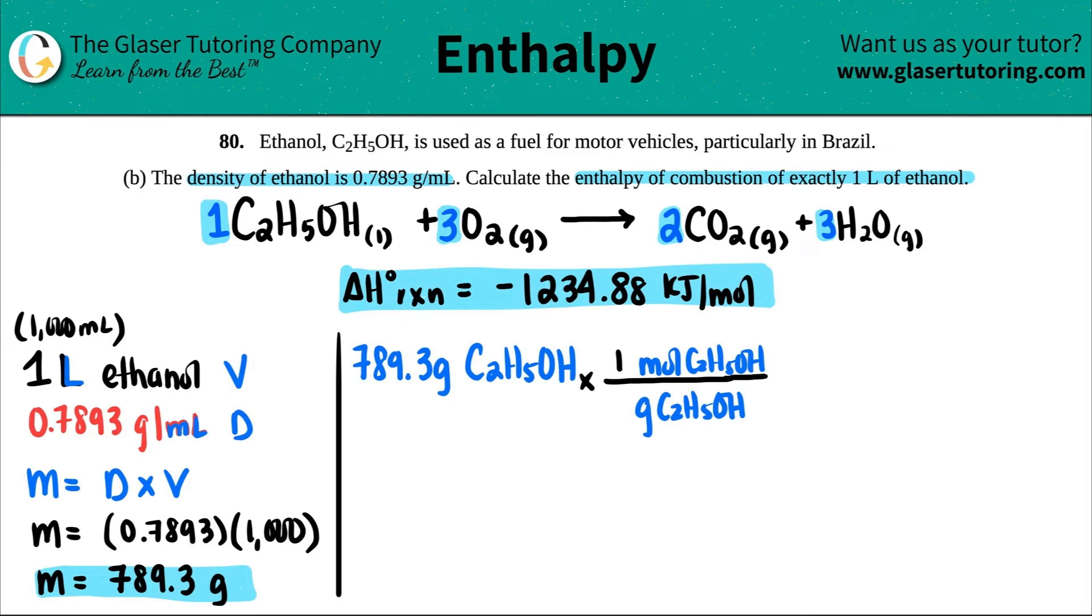We got two carbons. So 12.01 times two, plus I got a total of six hydrogens. And then I have one oxygen in ethanol. So I'm just going to add 16. So I get roughly 46.068. And that's going to cancel out my grams of the ethanol. Now I'm at moles.